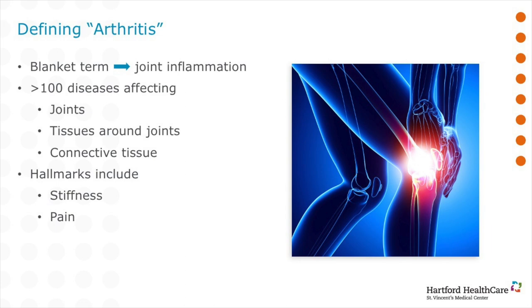Let's start by defining the word arthritis. It's used by clinicians to specifically mean inflammation around the joints. It refers to more than 100 diseases and conditions that affect joints, tissues surrounding the joint, and other connective tissues. The pattern, severity, and location of symptoms vary depending on the type of disease. Typically these conditions are characterized by pain and stiffness in or around one or more joints. The symptoms can gradually develop or develop suddenly. Certain conditions can also involve the immune system or other internal organs of the body.